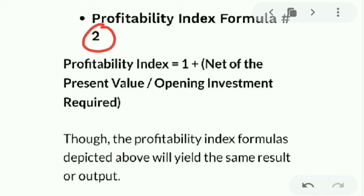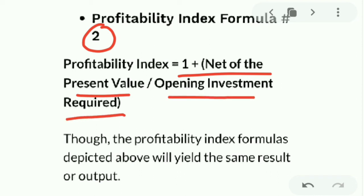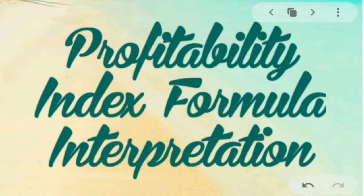The second formula in the detailed calculation is: Profitability Index equals one plus the net present value divided by the opening investment required. All elements are the same as the first formula except for the addition of one. The net result from both formulas in the detailed process will be the same.